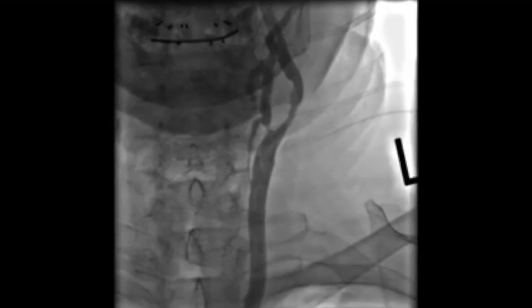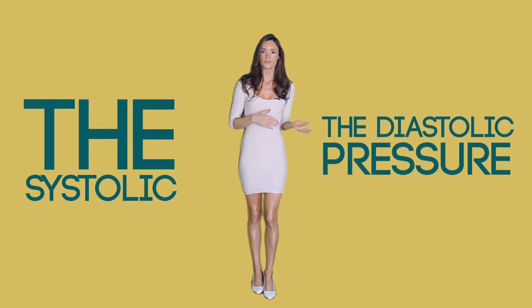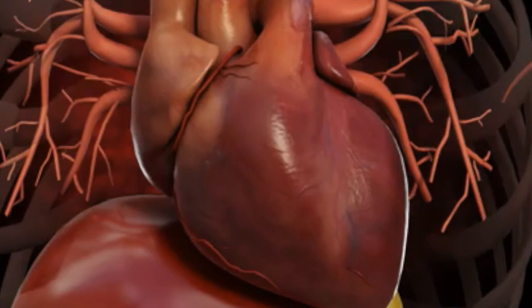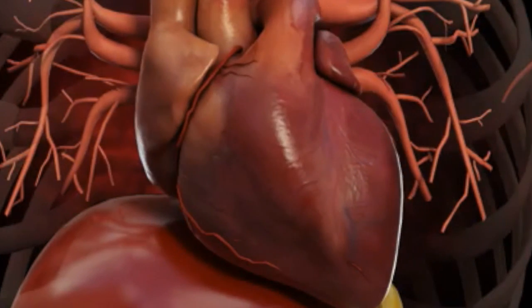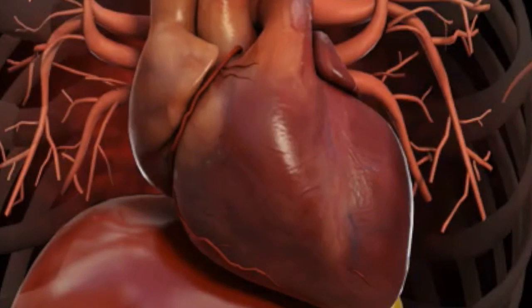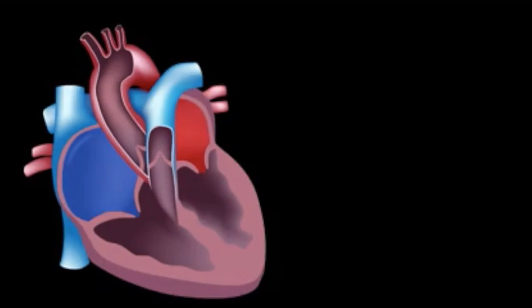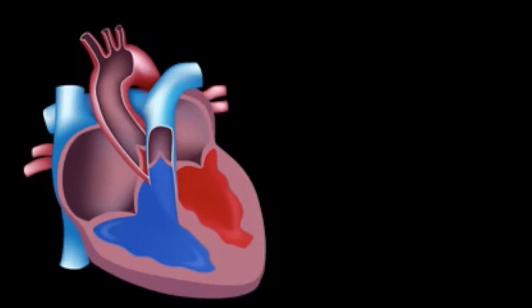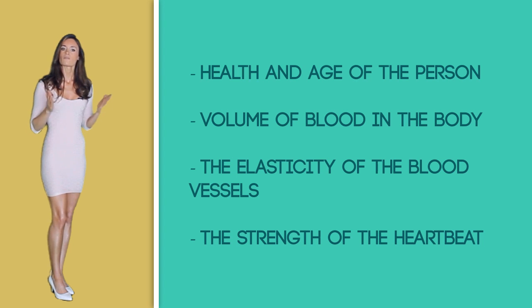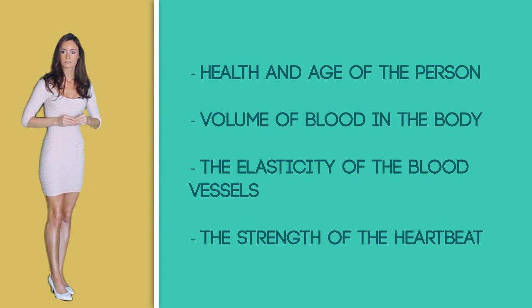Hypertension. The pressure exerted by the blood on the walls of the arteries and other blood vessels is known as blood pressure. It has two main components, the systolic and the diastolic pressure. The systolic pressure is the pressure with which the left ventricle of the heart pushes blood through the body while contracting, and the diastolic pressure is the pressure exerted when the ventricles are filled with blood upon relaxation. Factors that can alter blood pressure are health and age of the person, volume of blood in the body, elasticity of the blood vessels, and strength of the heartbeat.